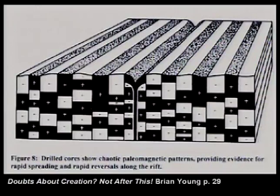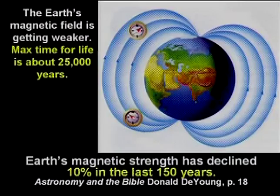The Earth has lost 10% of its magnetic strength in the last 150 years, and 40% of its strength in the last 1,000 years. It's pretty overwhelming evidence that the Earth's magnetic field is getting weaker. That means it used to be stronger. If you go back in time about 25,000 years, the magnetic strength would have been too great for life to exist here because of the heat generated. So evolutionists say it must be going through reversals — but it has never been observed to reverse. It's only ever been observed to decline.